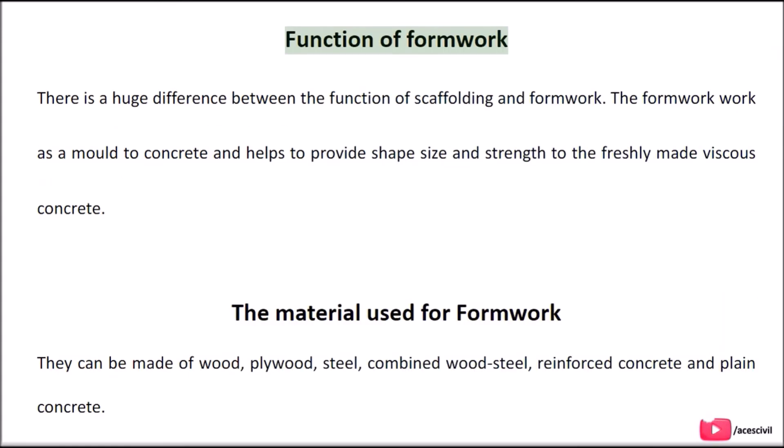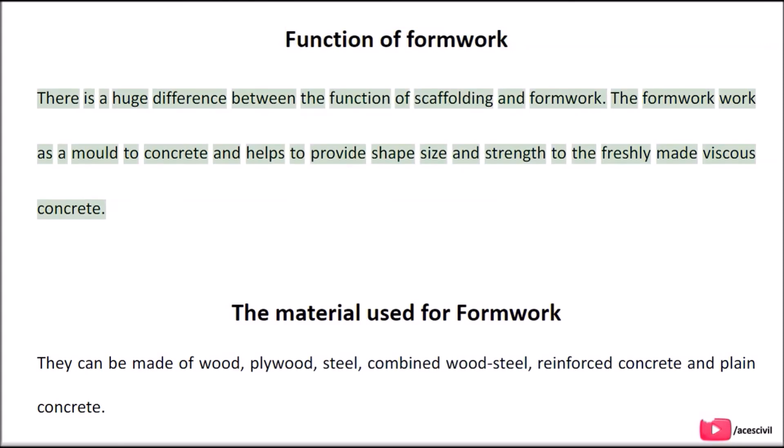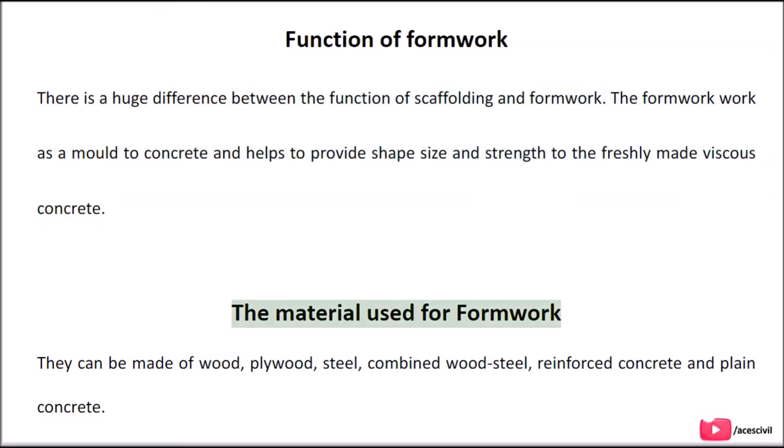Function of Formwork: There is a huge difference between the function of scaffolding and formwork. Formwork acts as a mold for concrete and helps to provide shape, size, and strength to the freshly made viscous concrete. Materials used for formwork: They can be made of wood, plywood, steel, combined wood-steel, reinforced concrete, and plain concrete.